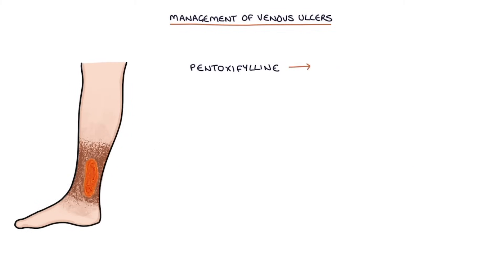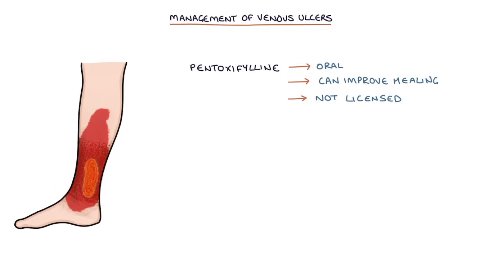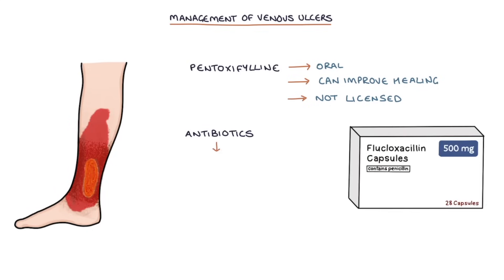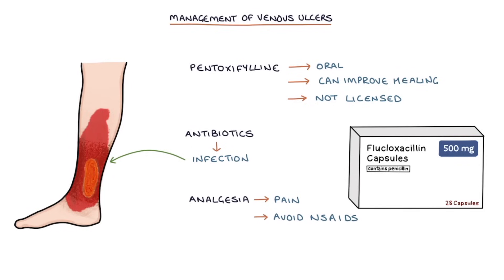Pentoxifylline, which is a drug taken orally, can improve healing in venous ulcers; however, be aware that this is not a licensed indication. Antibiotics can be used to treat any infection that is present, and analgesia is used to manage pain. However, avoid non-steroidal anti-inflammatory drugs as they can worsen the condition.